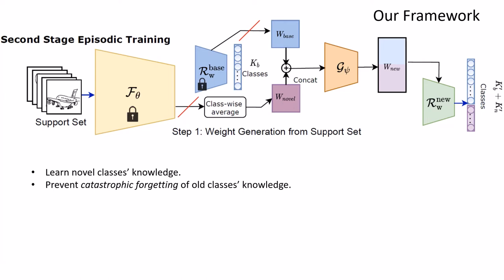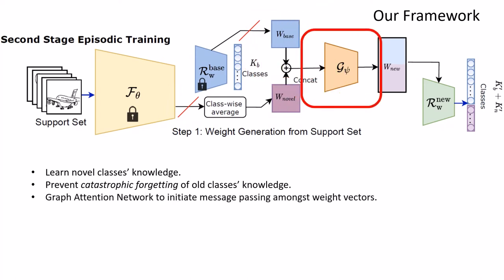To classify from novel classes, we need to generate additional weight vectors for them. We thus learn a weight generator GSI through episodic pseudo-incremental learning in two steps. Firstly, a sketch support set is used to produce weight vectors for novel classes as well as to refine those of base classes. To do so, a graph attention network initiates message passing amongst the novel and base class vectors to obtain WNU.